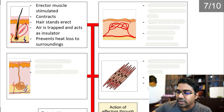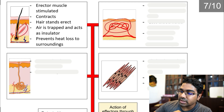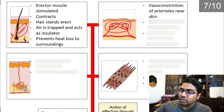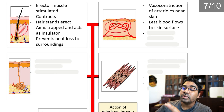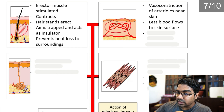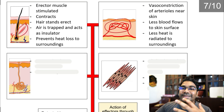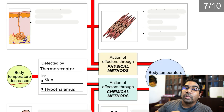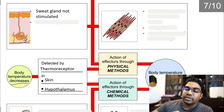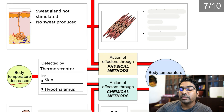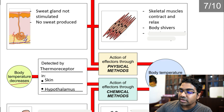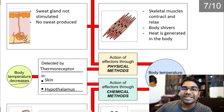Vasoconstriction occurs in the arterioles near the skin, making them thinner. Less blood flows to the surface, so less heat is radiated to the surroundings and more heat is retained inside the body. When it's cold, the sweat glands are not stimulated so no sweat is produced. The skeletal muscles are stimulated to contract and relax, causing shivering, and when the body shivers heat is generated.